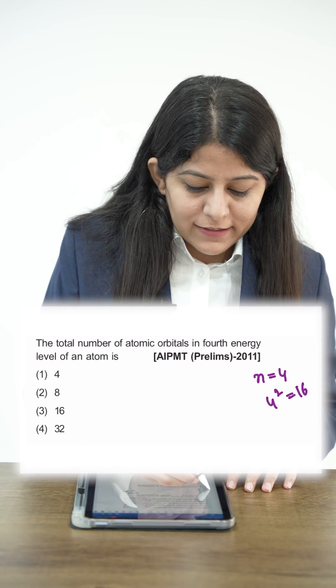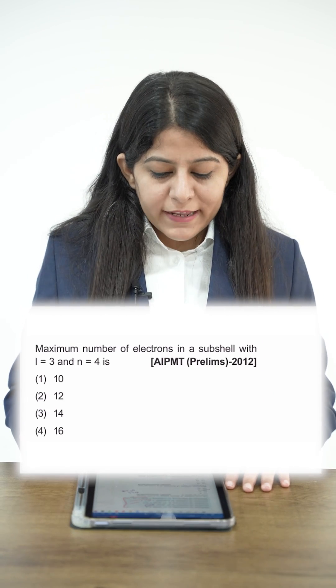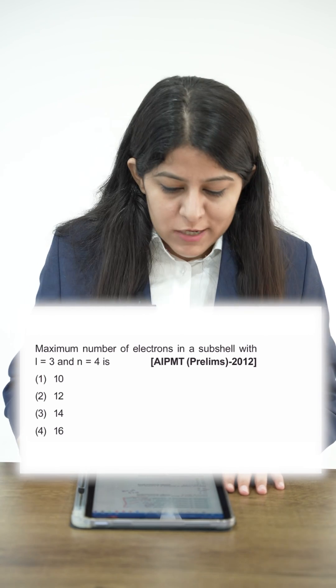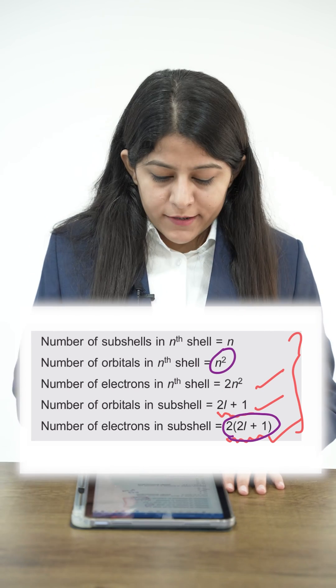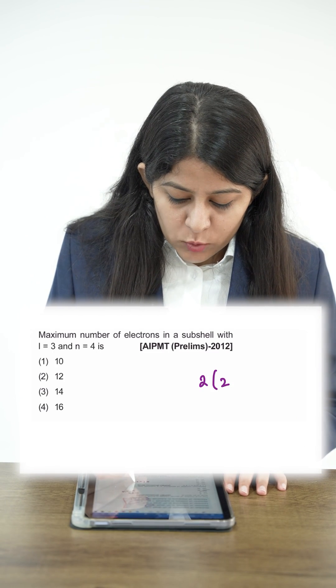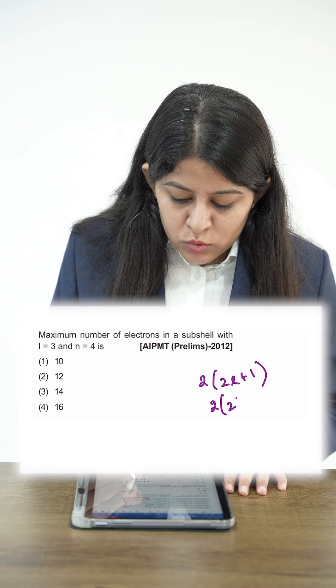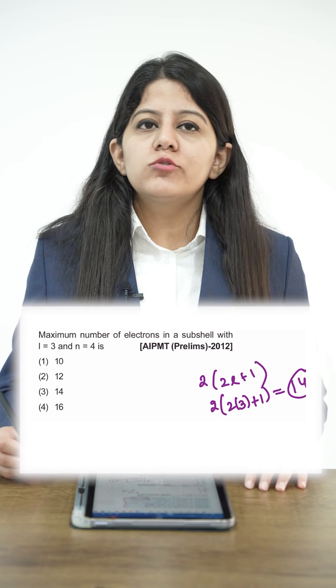Next question: maximum number of electrons in a subshell with l=3 and n=4. Maximum electrons in a subshell is 2(2l+1). So with l=3, it's 2(2×3+1) equals 14. Or simply, l=3 means f subshell, and f subshell can have 14 electrons. The correct answer is 14.